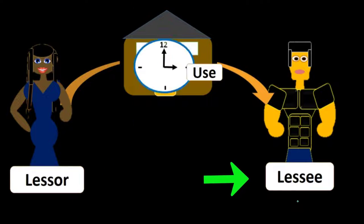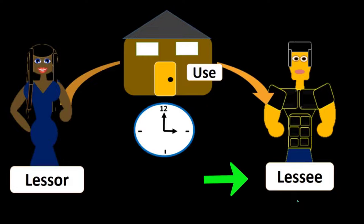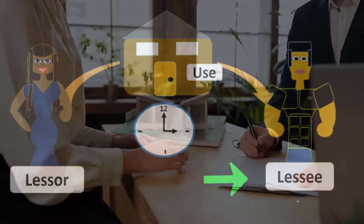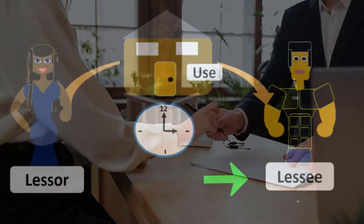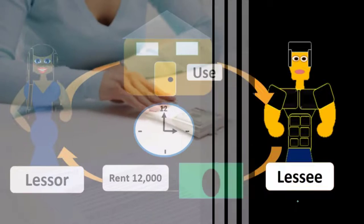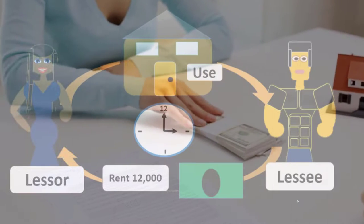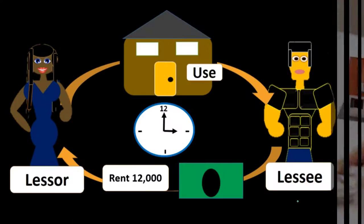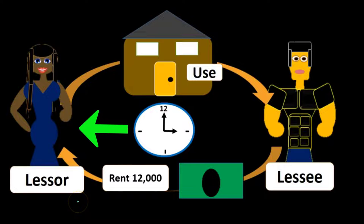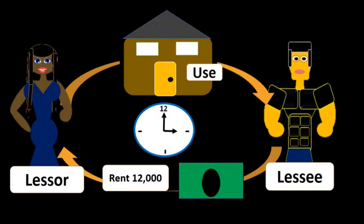As time passes, the lessee will accumulate rent that is due to the lessor, and the rent will then be paid at that time period for the use of the property, even though the lessor still has ultimate ownership of that property.